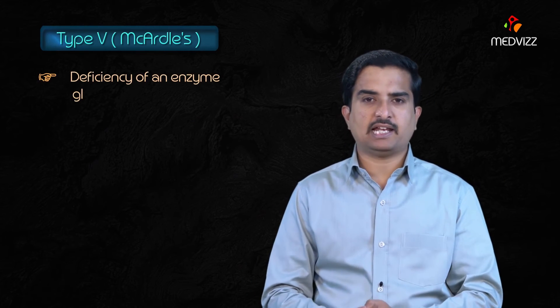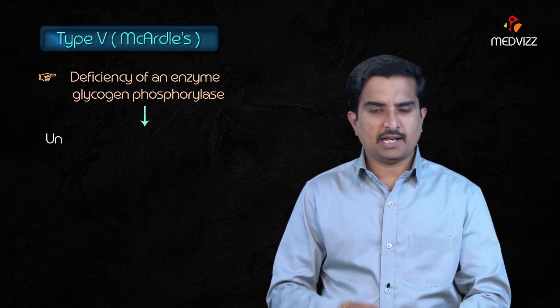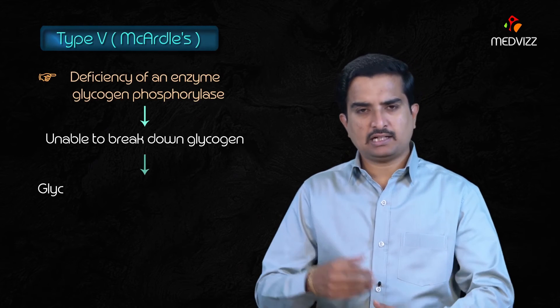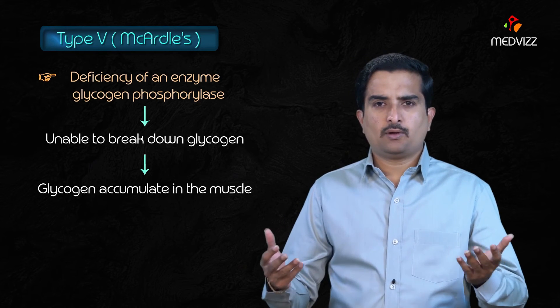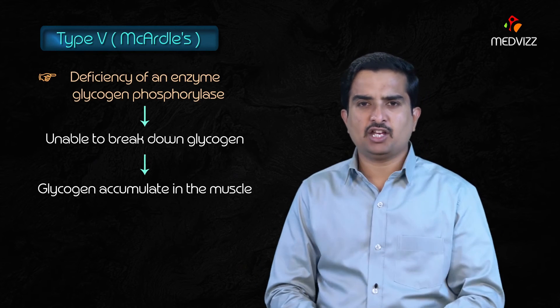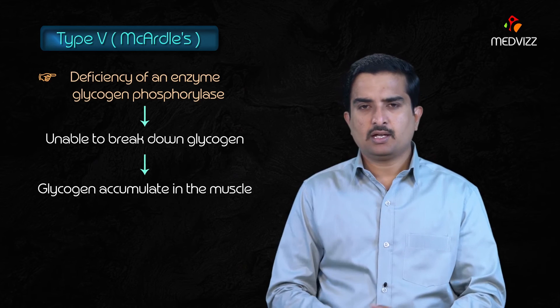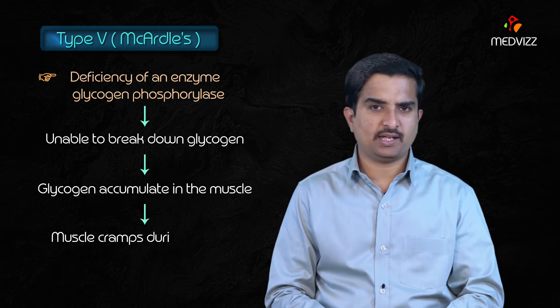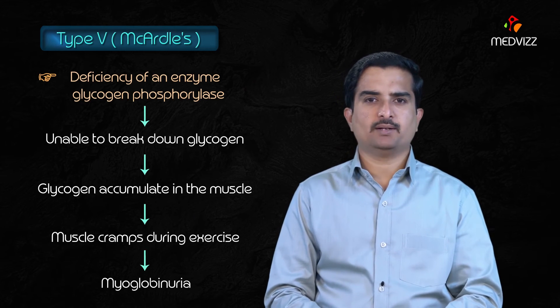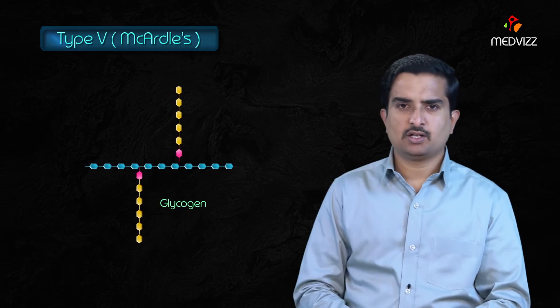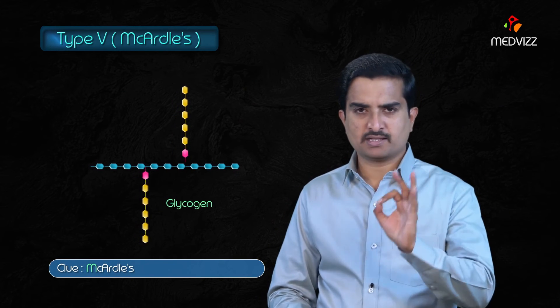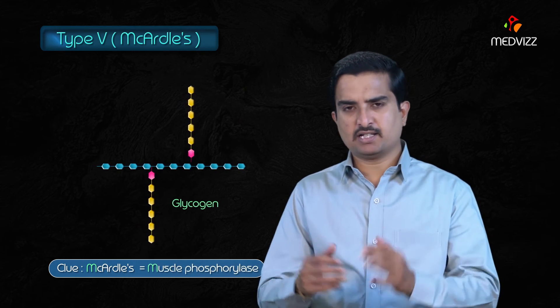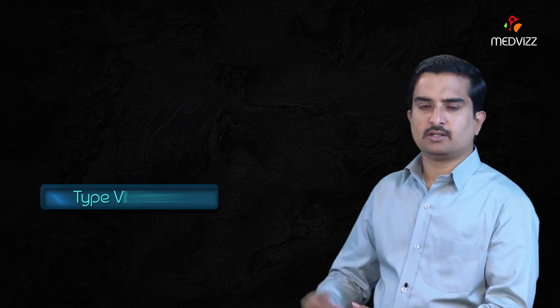Type 5, McArdle's disease, involves a defect in skeletal muscle glycogen phosphorylase, making it unable to break down glycogen, which accumulates in muscle. During strenuous or vigorous exercise, glucose cannot be produced from glycogen, so the patient may develop muscle cramps during exercise and myoglobinuria. Normal glycogen molecules are still formed in this disease. Remember: McArdle's involves defective muscle phosphorylase.